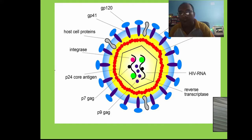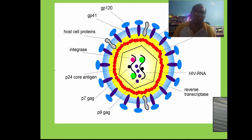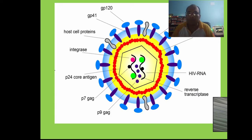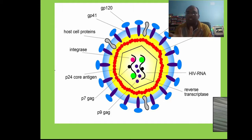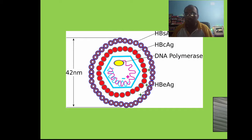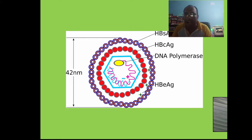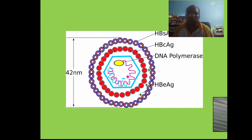Now you can see the structure of HIV virus, which also has RNA inside a protein coat called the capsid, along with various types of spikes coming from the envelope. You can see glycoprotein 120, GP41, host cell protein, integrase, and reverse transcriptase — these are enzymes present in the virus. Hepatitis B is a DNA virus, while hepatitis A and hepatitis C are RNA viruses. Hepatitis B contains a DNA polymerase enzyme inside the capsid and is 42 nanometers in diameter.